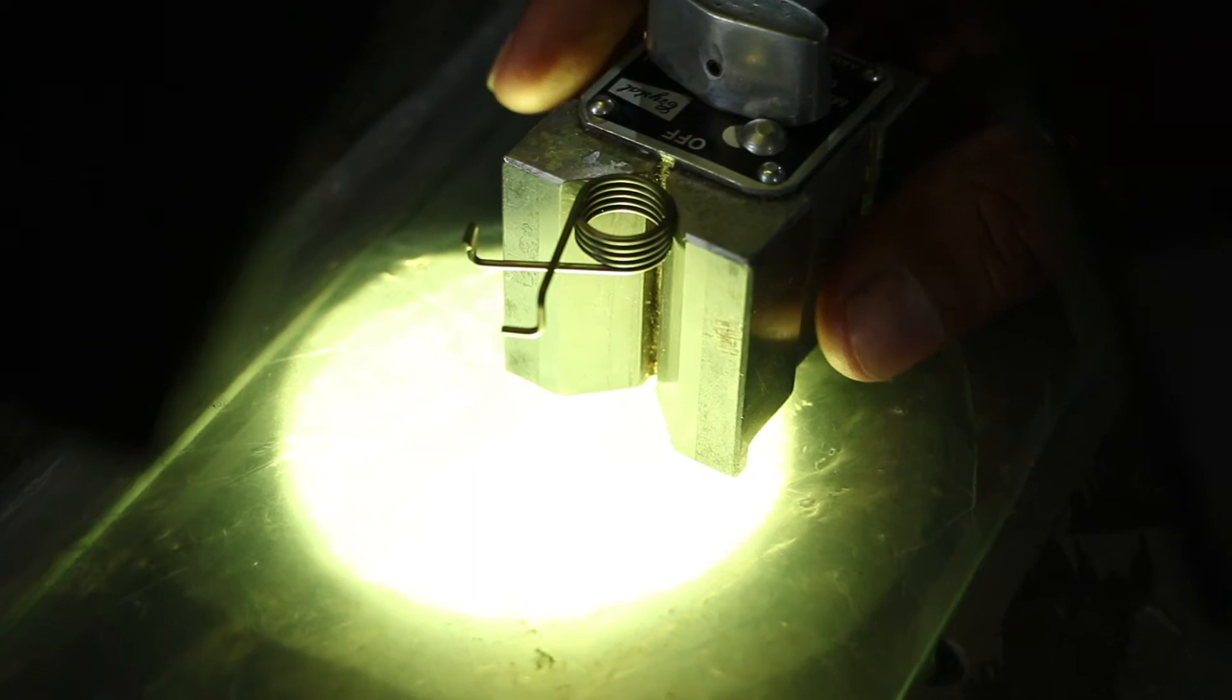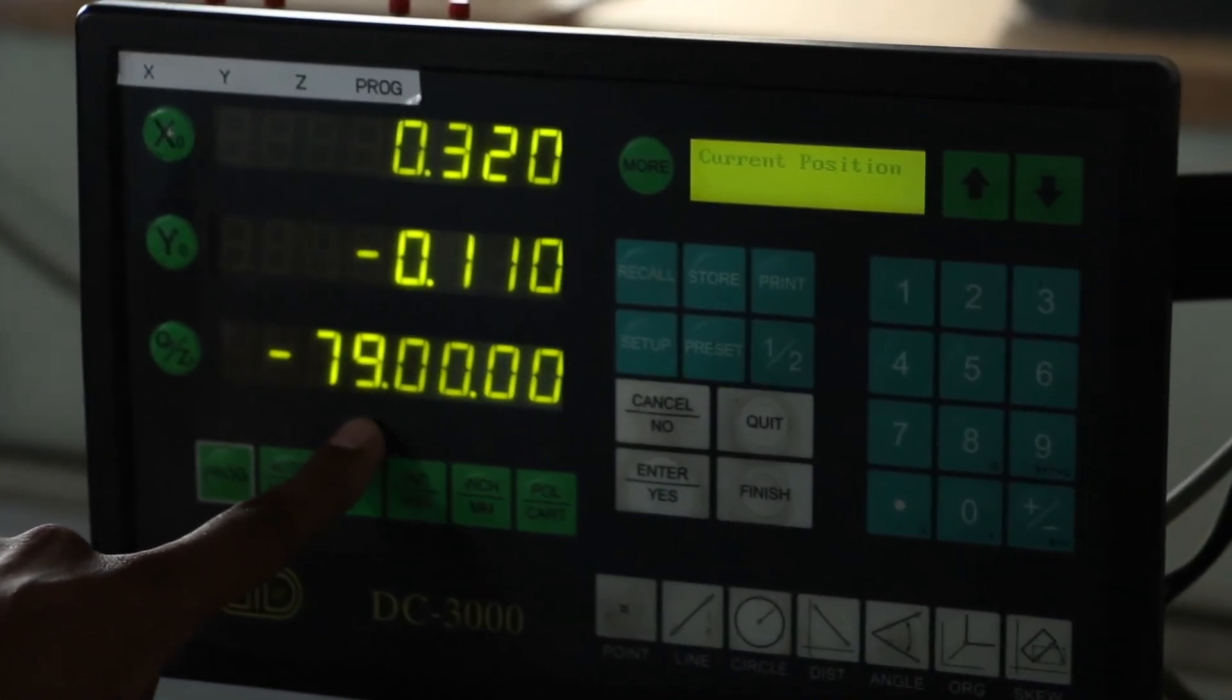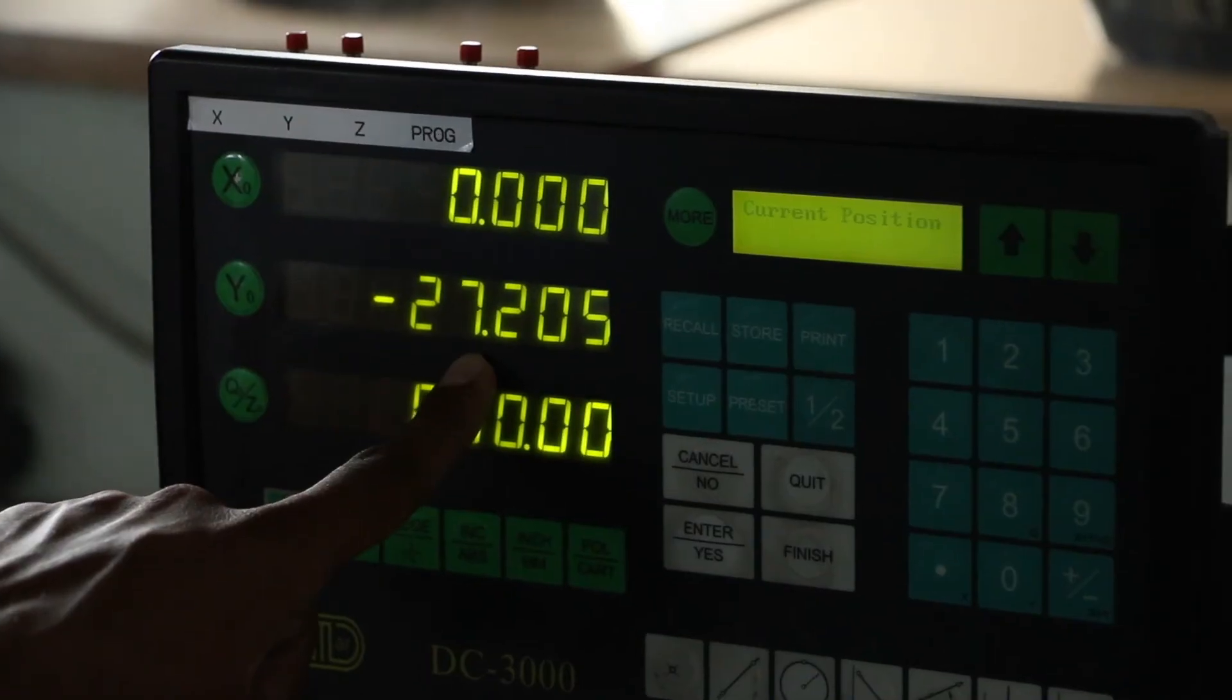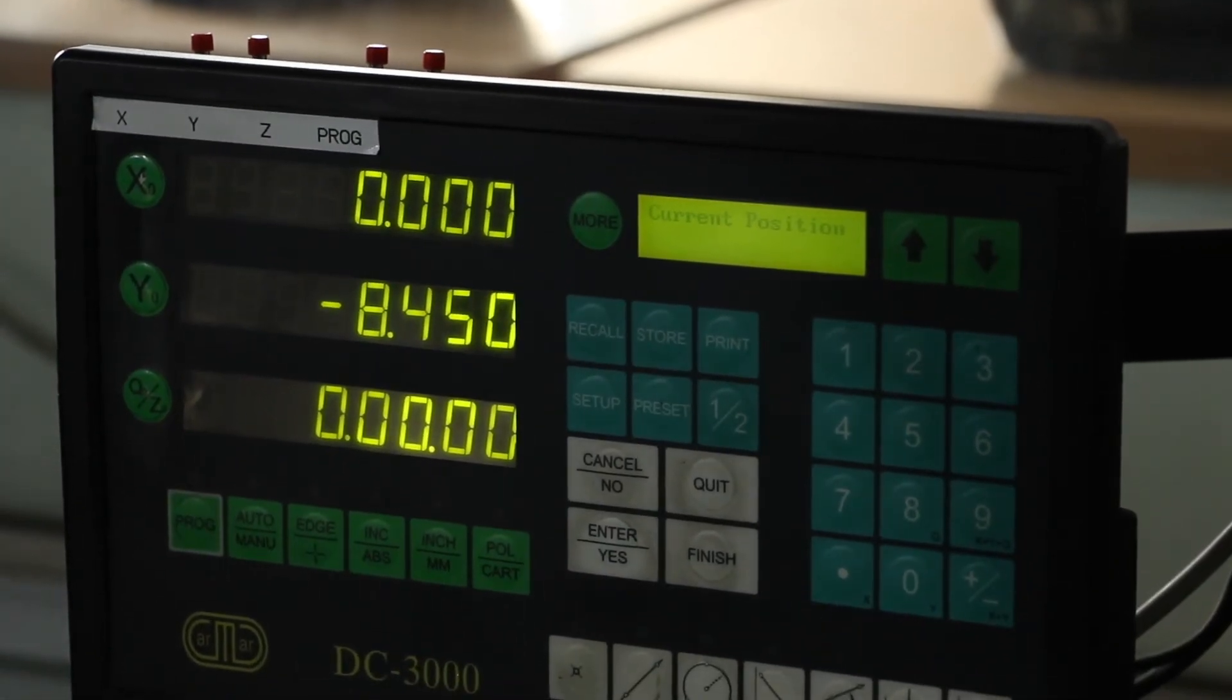Next we will find out angle, leg length and leg cutting length with the help of profile projector. So angle is 79 degrees. Leg length is 27.205 millimeters. Leg cutting length is 84.50 millimeters.